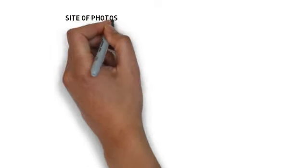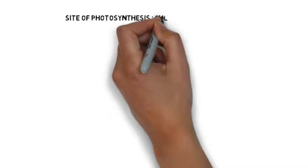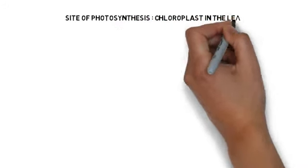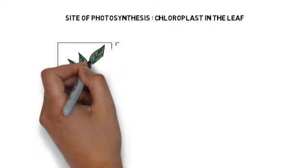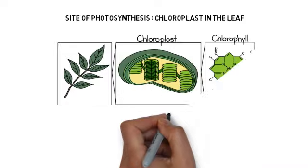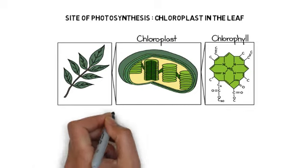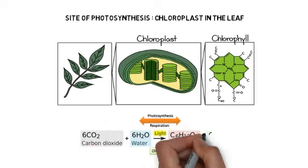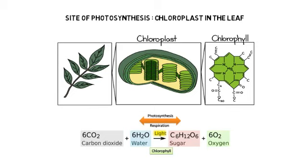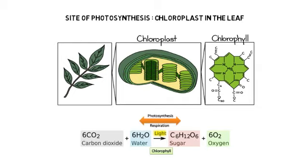The exact site of photosynthesis is the chloroplast in the leaf. Chloroplast is a cell organelle which contains green-colored pigments called chlorophyll. Chlorophyll has the ability to absorb solar energy and convert it into chemical energy. In the presence of sunlight and chloroplast, carbon dioxide and water combine to form glucose and release oxygen. This process is called photosynthesis.